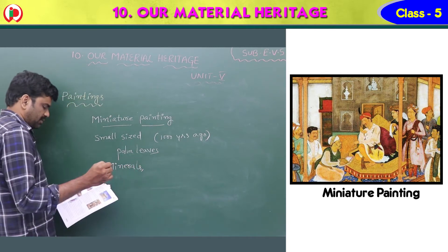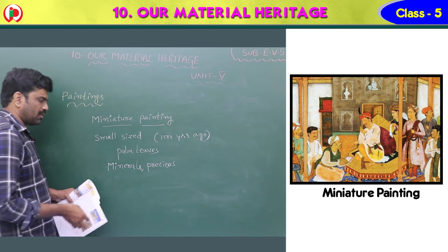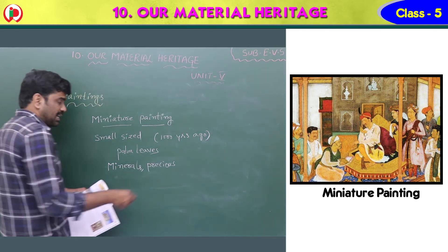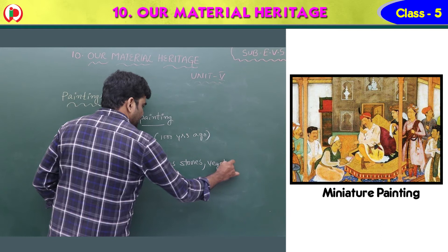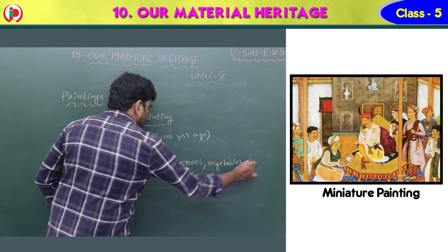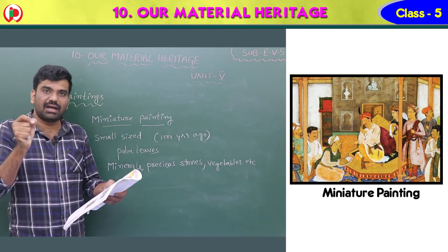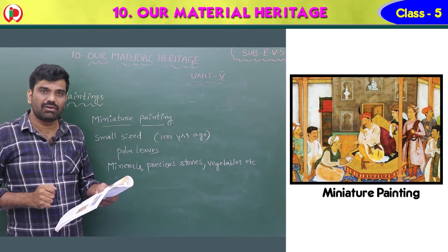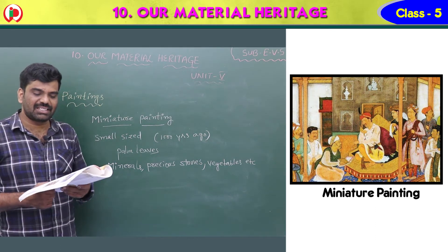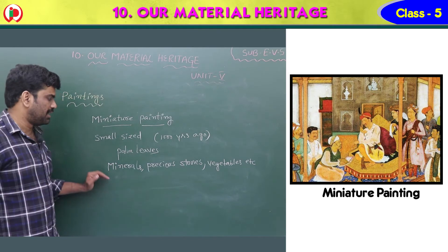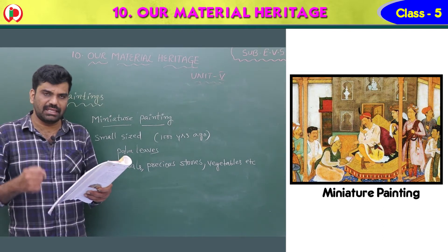Colors for these paintings were extracted from minerals — extracted means taken. So colors were taken from minerals. Next, from precious stones — valuable stones — and also from vegetables. At that time there were no color paints like watercolors, so colors were taken from minerals, precious stones, and vegetables.